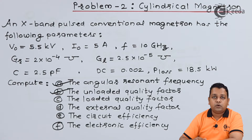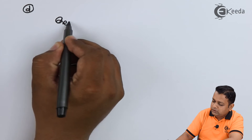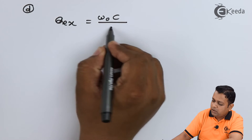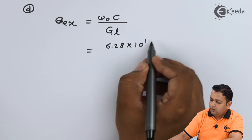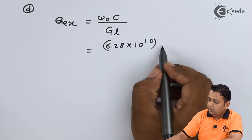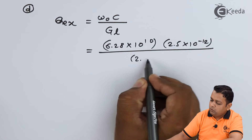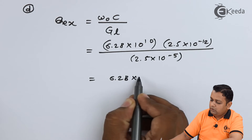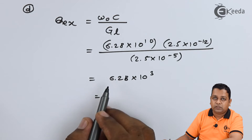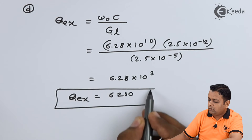For Part D, the external quality factor Q_EX is computed as ω₀ × C divided by GL. Substituting 6.28×10¹⁰ for ω₀, 2.5×10⁻¹² for C, and 2.5×10⁻⁵ for GL, we obtain 6.28×10³ = 6280. This is the external quality factor for the given device.